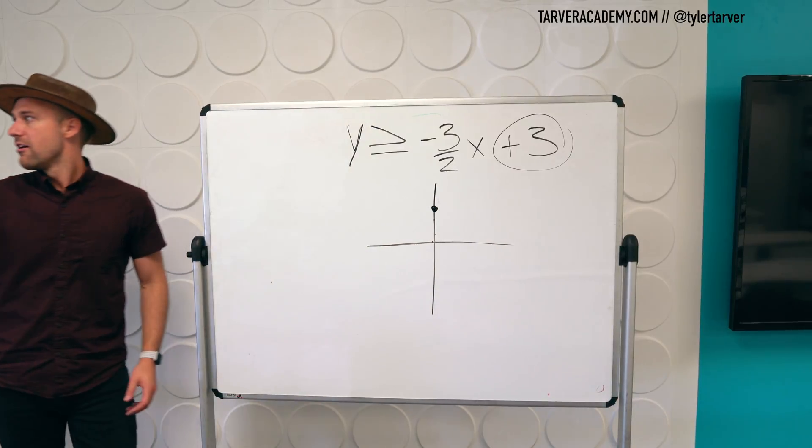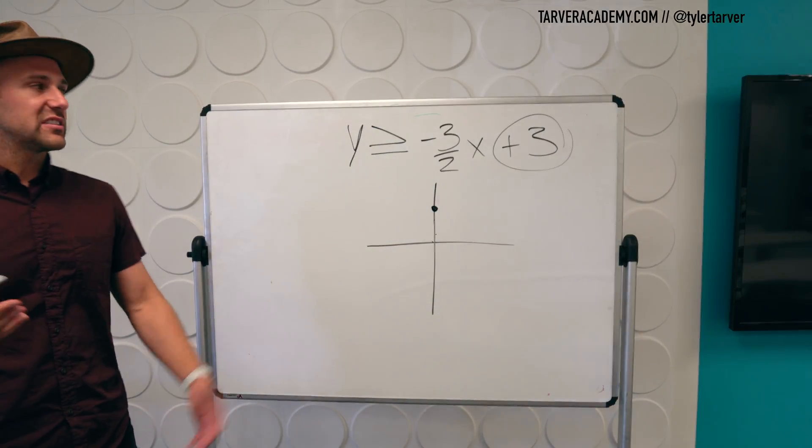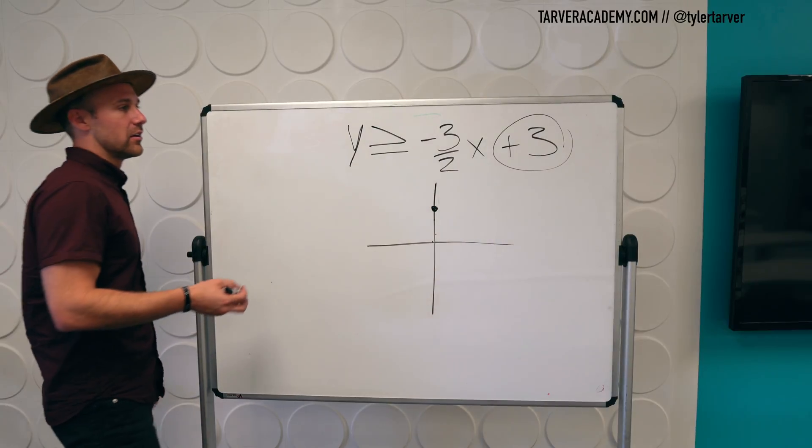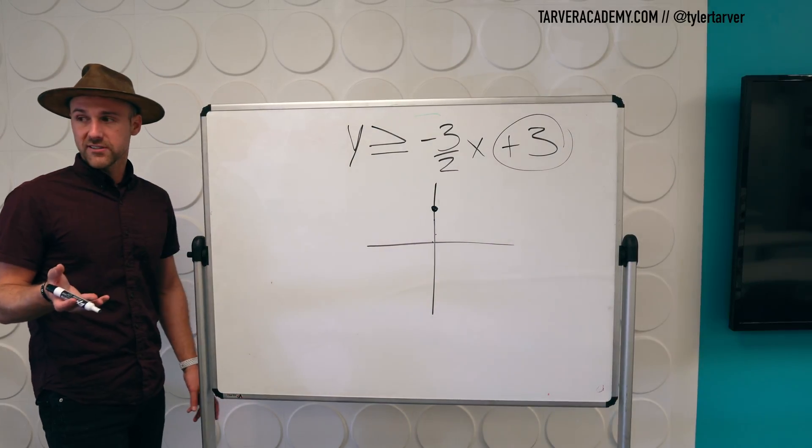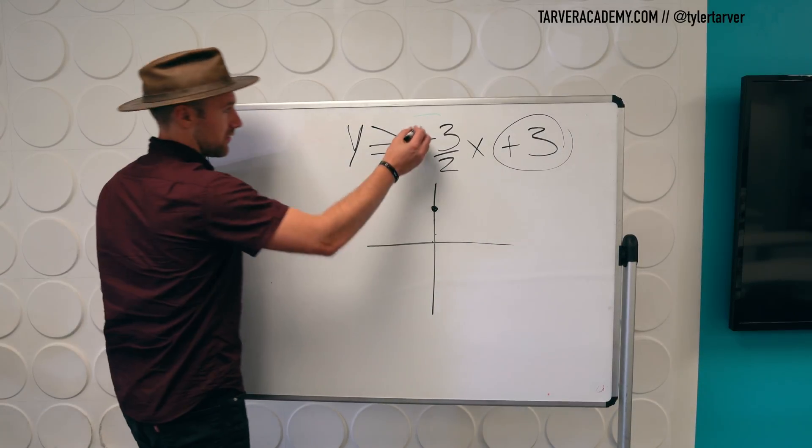Good job. From that coordinate, all I have to do is count rise over run. Yes. Which is what? Where's my slope? Negative three over two. Very good.